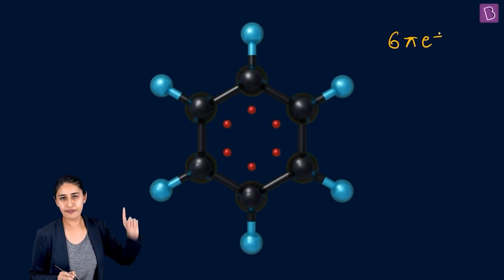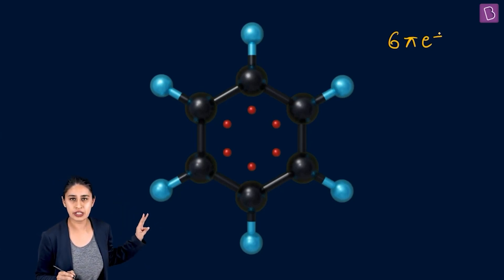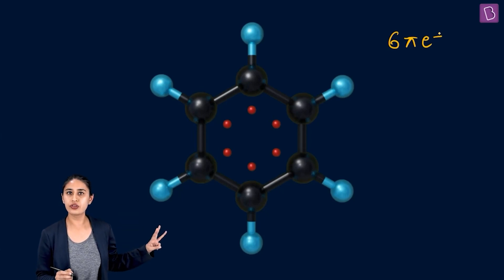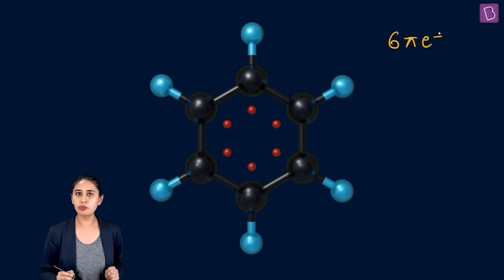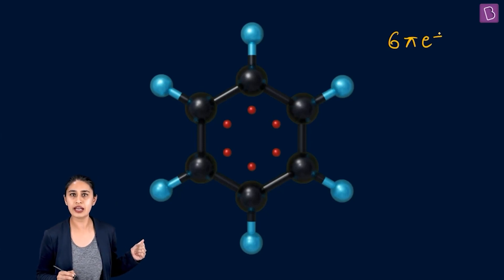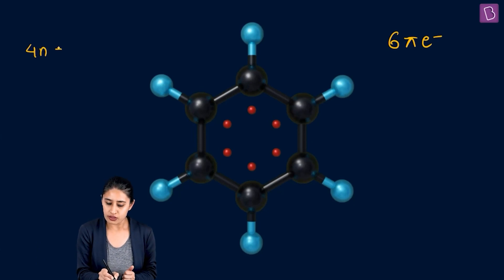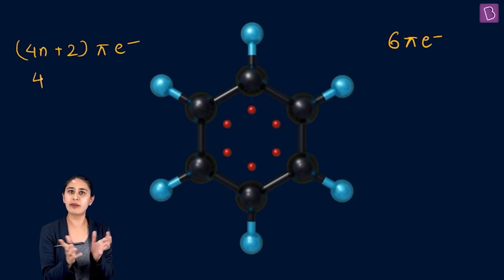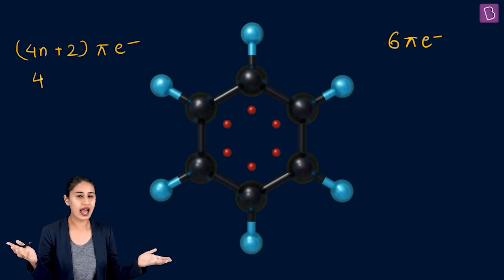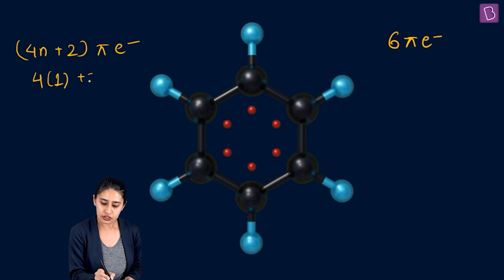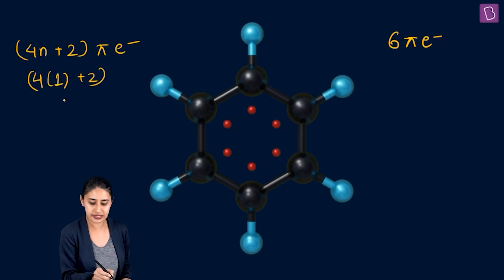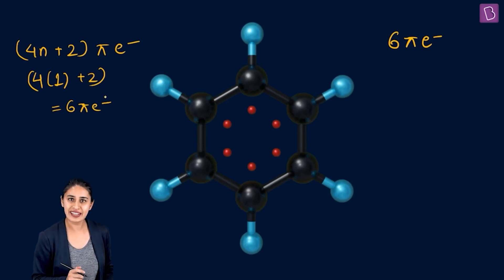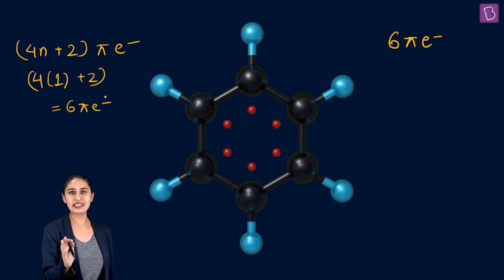Is benzene satisfying Huckel's rule? Of course it is cyclic, all carbons are sp2 hybridized and planar, and there is conjugation. For the fourth point, we apply the formula: 4n + 2 pi electrons should be there. If I put n = 1, then 4×1 + 2 = 6. So if there are 6 pi electrons, yes — it is aromatic. Benzene is absolutely aromatic, the famous aromatic compound.